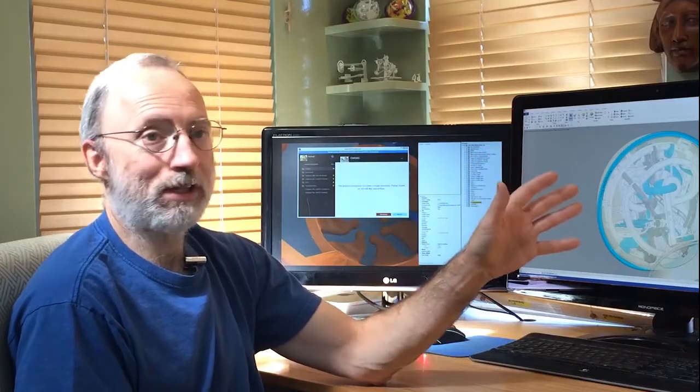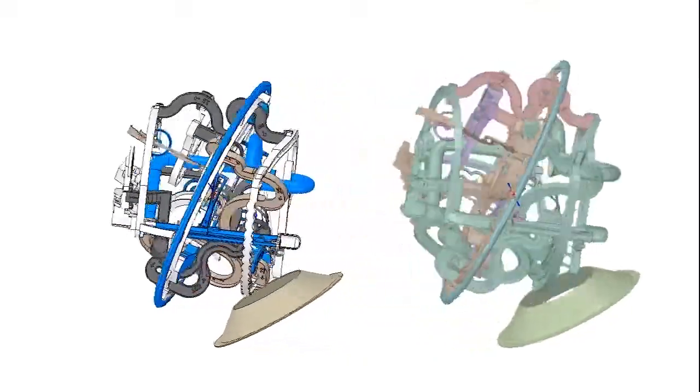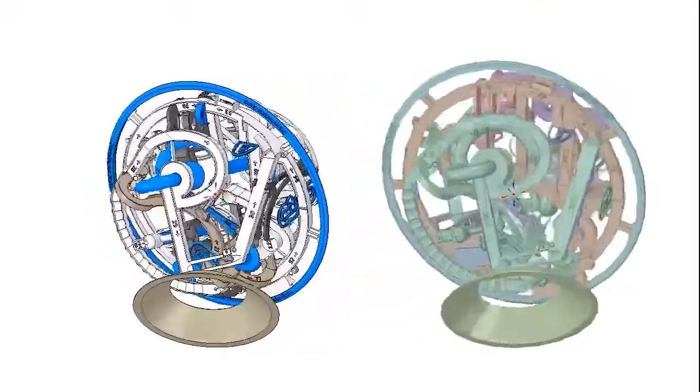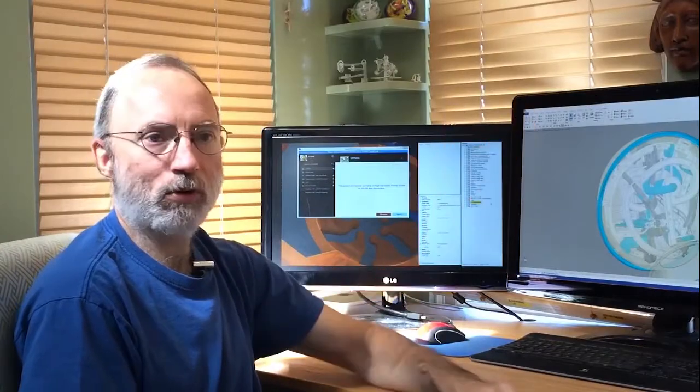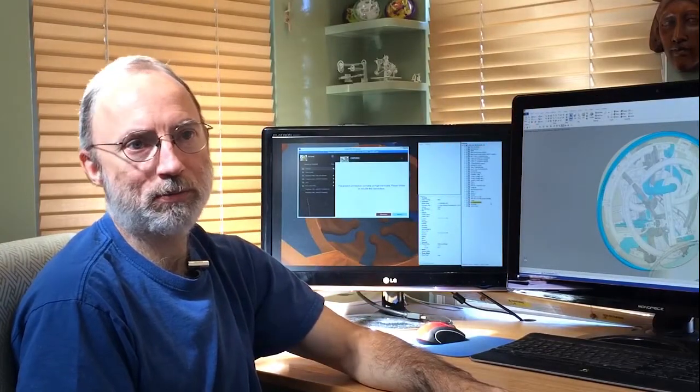And SpaceClaim, it's just extremely easy for me to save it as an STL file. I then open it again to make sure it looks real, it looks whole. Upload it, and the next thing I get is a quote on the printing, and it shows up.